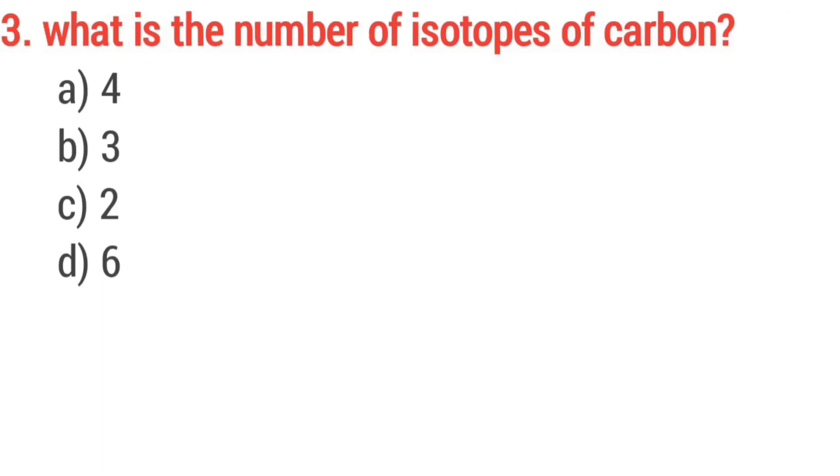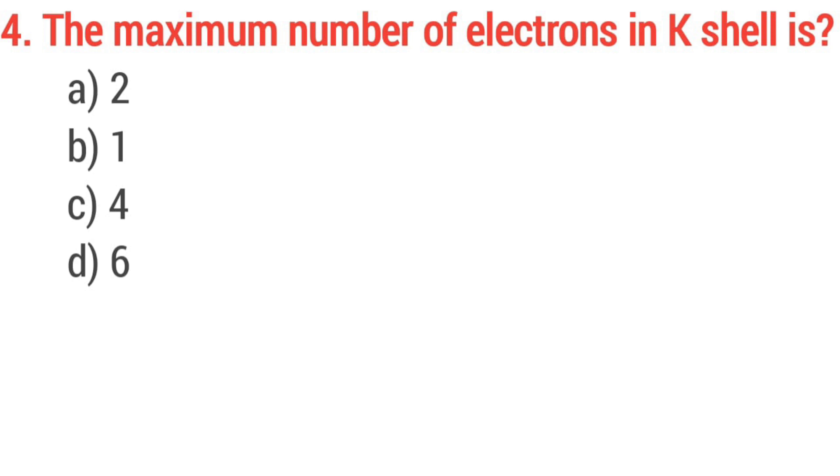Question number 3. What is the number of isotopes of carbon? Option D, 6. Question number 4. The maximum number of electrons in the outermost shell is? Option A, 2.